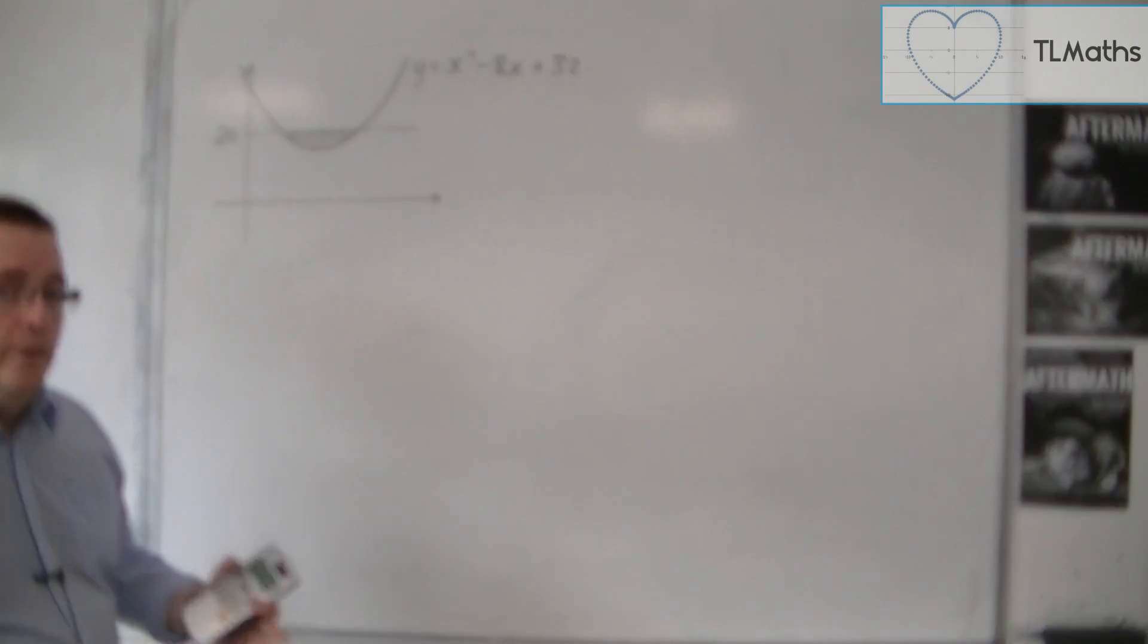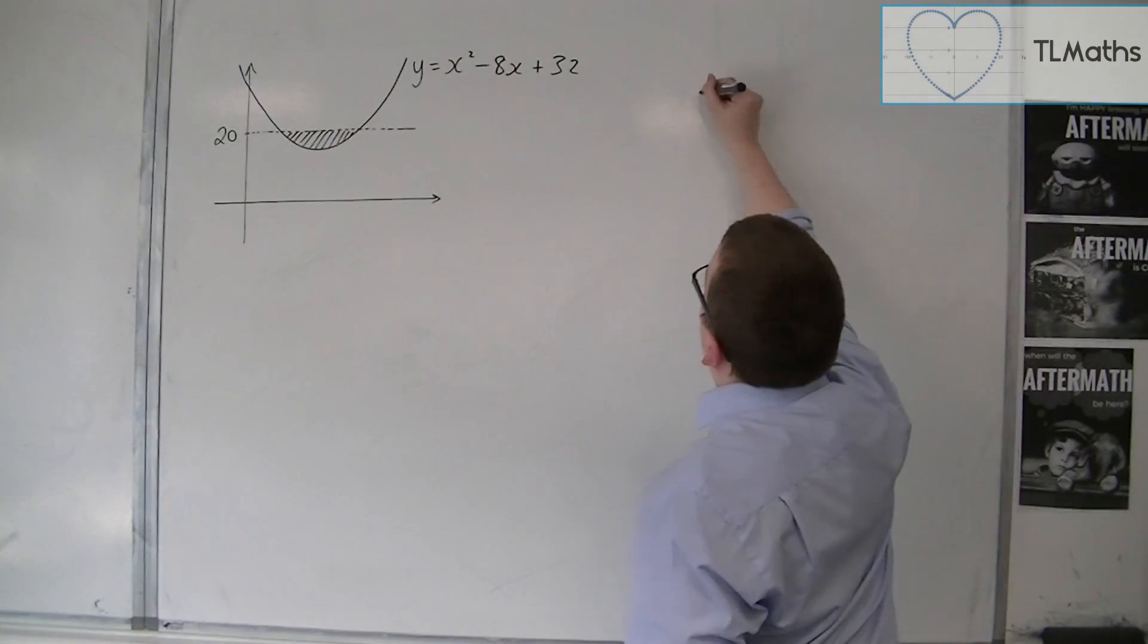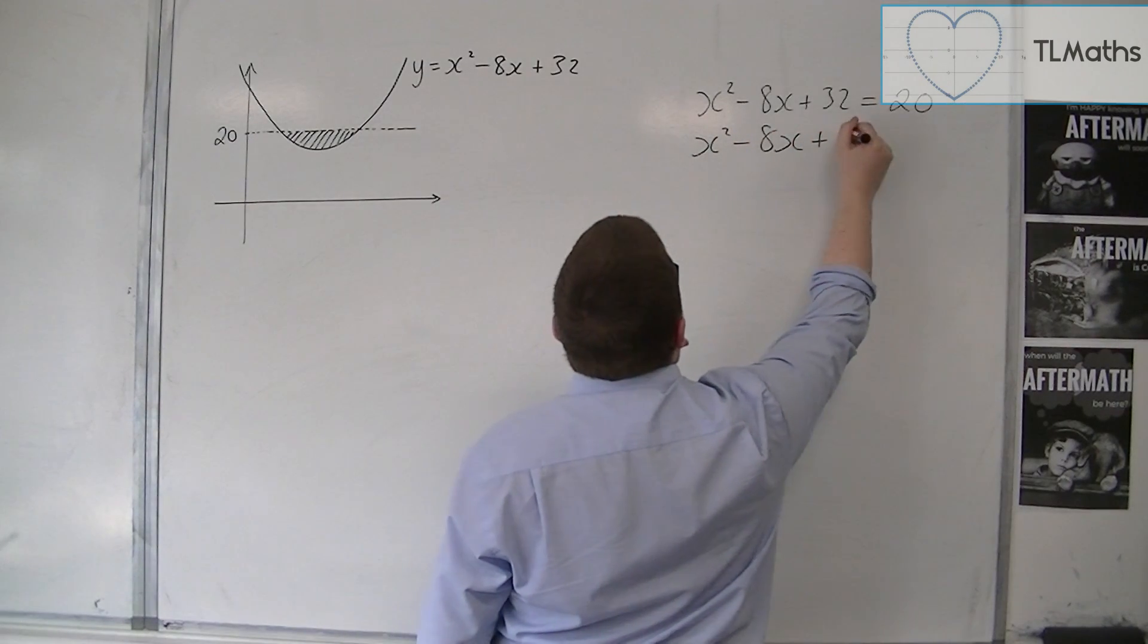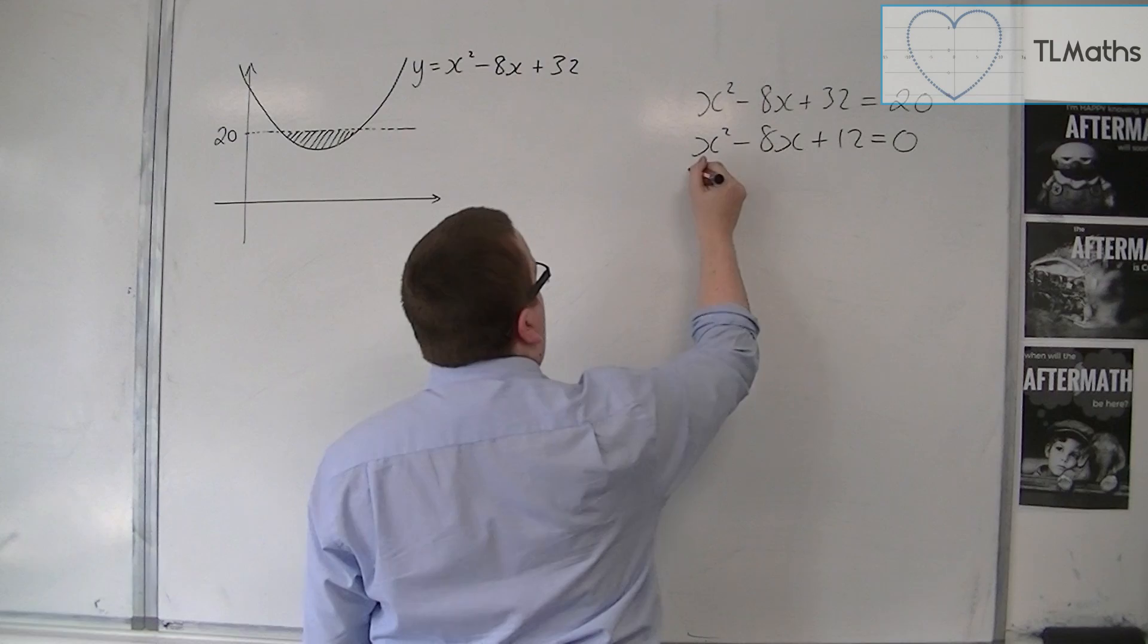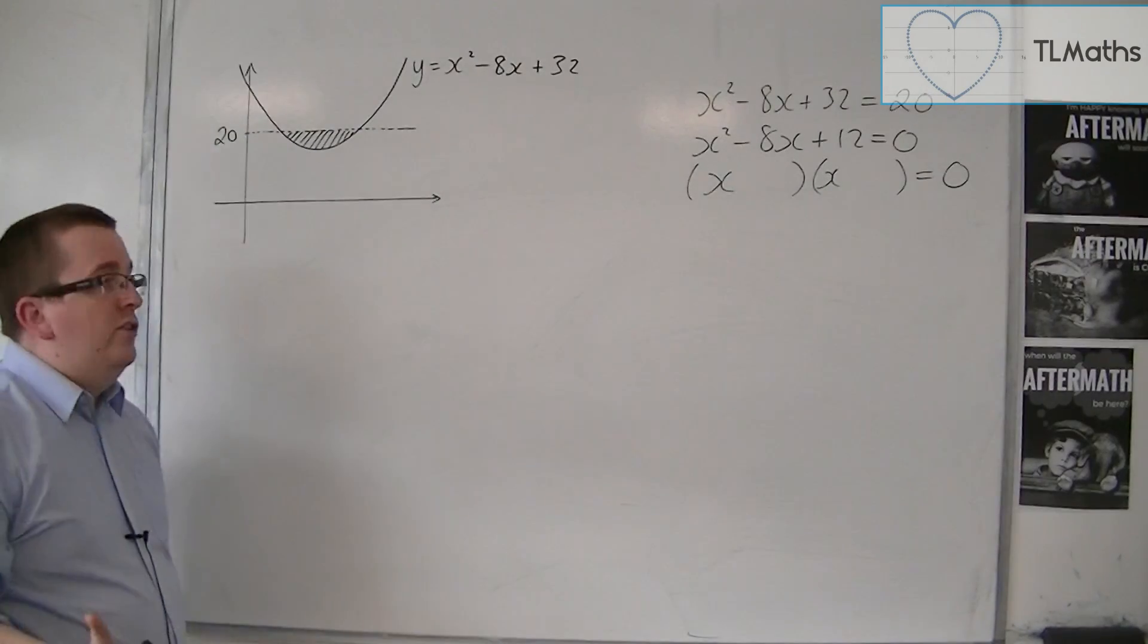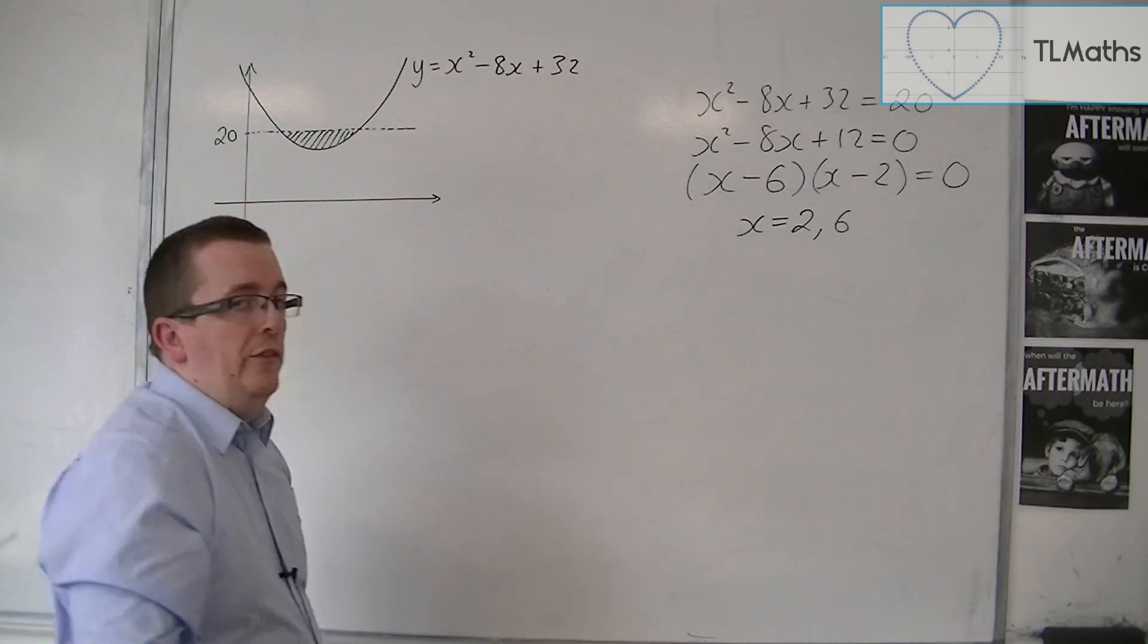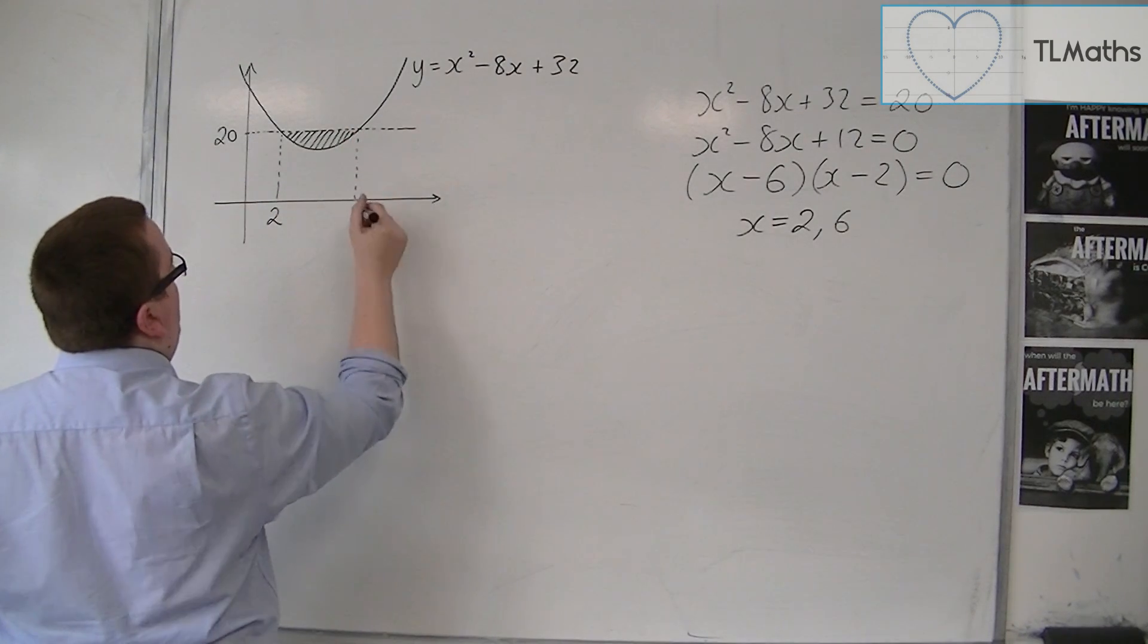So we need to find the x coordinates. So we're going to put this equal to 20 to determine where those points are. So we would first put x squared minus 8x plus 32 equals to 20. Then we can take 20 from both sides. And this gives us a quadratic that factorises. So we have two numbers that multiply together make 12 but add together make minus 8 is minus 6 and minus 2. And so we're going to have x equals 2 or 6 from this equation. So this point is x is 2 and this point is x is 6.